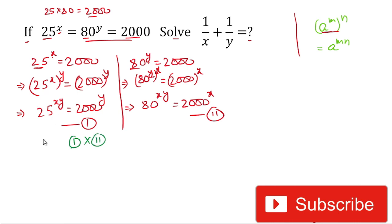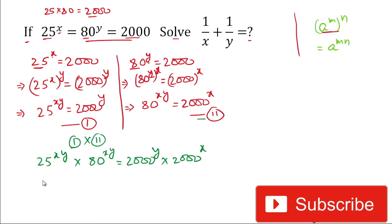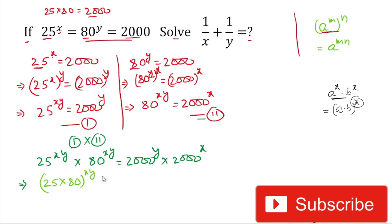Now for solving, we multiply Equation 1 with Equation 2. On the left-hand side we have 25 to the power xy multiplied by 80 to the power xy. The right-hand side is 2000 to the power y multiplied by 2000 to the power x. Since the powers are the same on the left, using a^x × b^x = (ab)^x, we write 25 multiplied by 80 to the power xy.